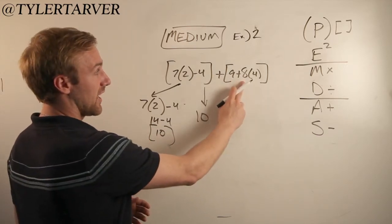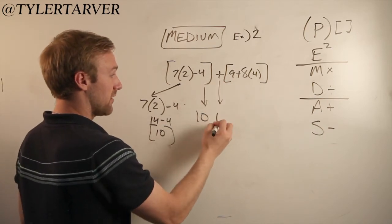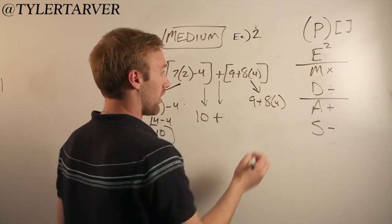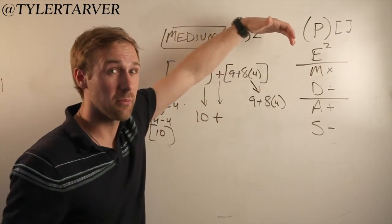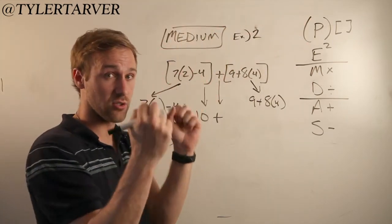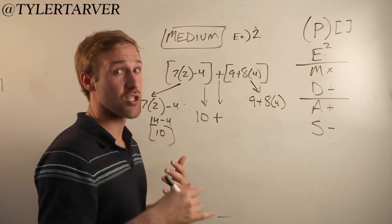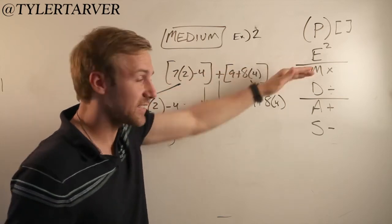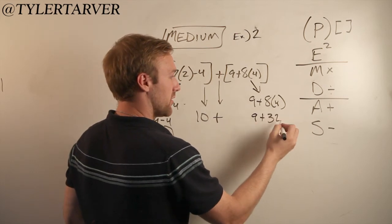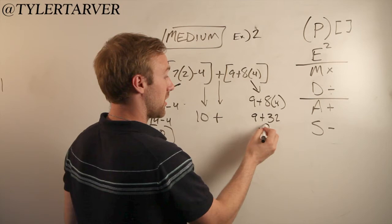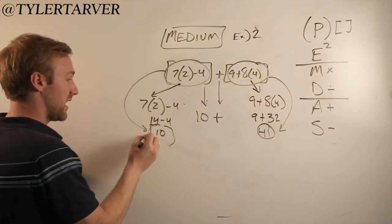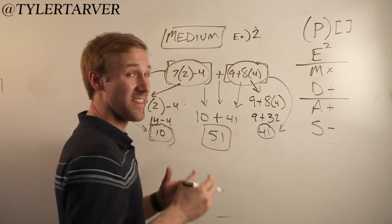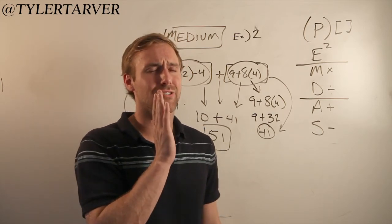Now the other parentheses: (9 plus 8 times 4). Do this again — no parentheses with operations, no exponents. Is there multiplication? Yes: 8 times 4 is 32. So 9 plus 32 — only one operation left, add them: 41. So all this equals 41, just like the other side equaled 10. Bring it down: 10 plus 41. Last step — only one operation left: 10 plus 41 is 51. That's your final answer. You just did a medium-difficult problem — order of operations!